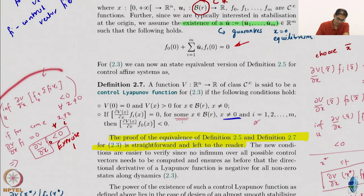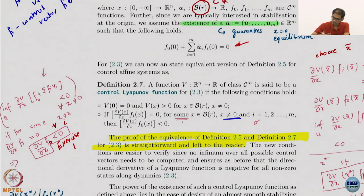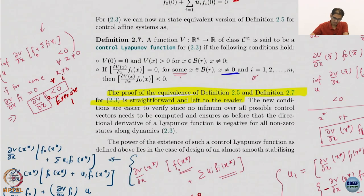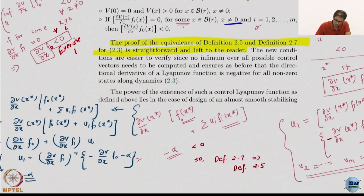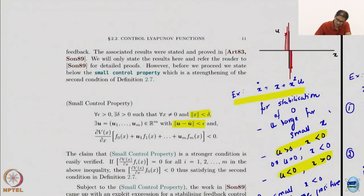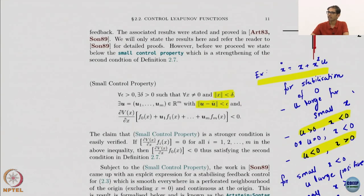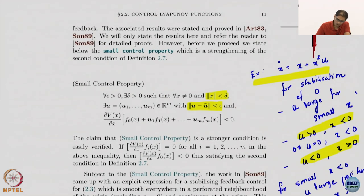This is how you prove that this new definition implies the original definition for control affine systems. The other direction - that the first definition implies this definition - is the exercise you have to prove. It should not be too difficult. But we have still not reached where we want to: we still do not have a way of constructing nicer controls that are smooth at the origin.